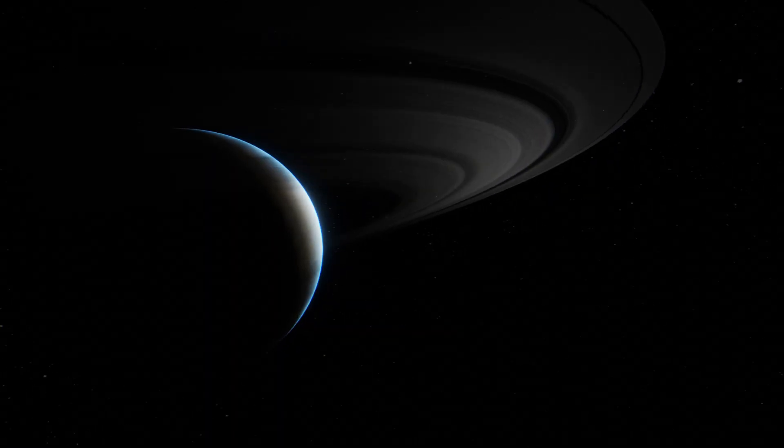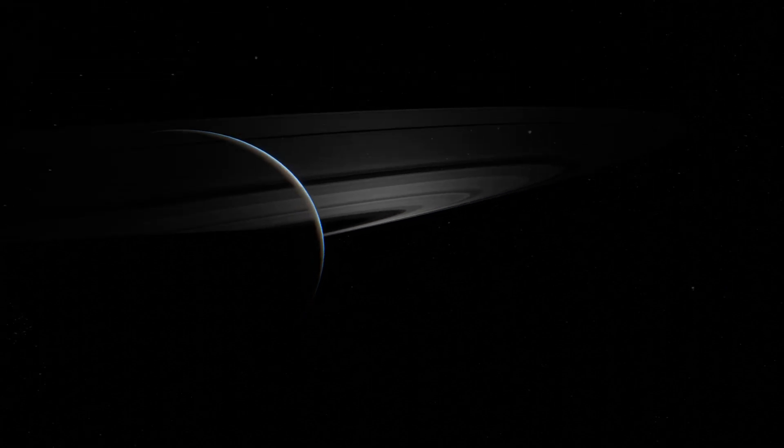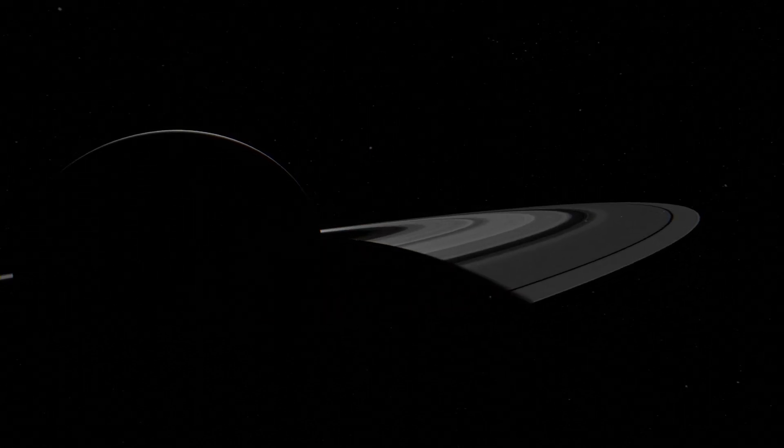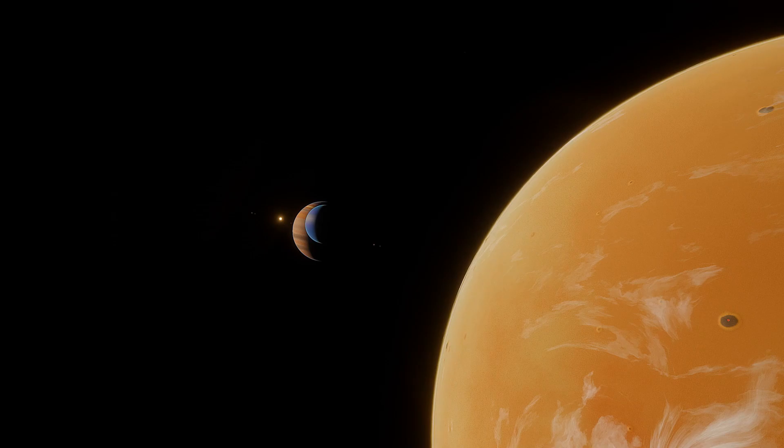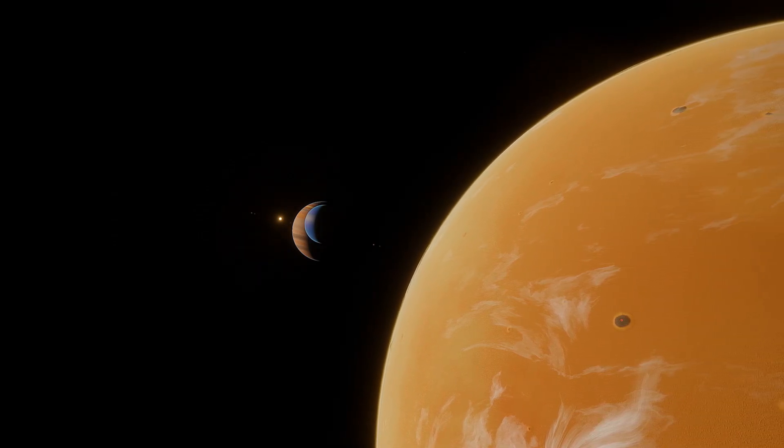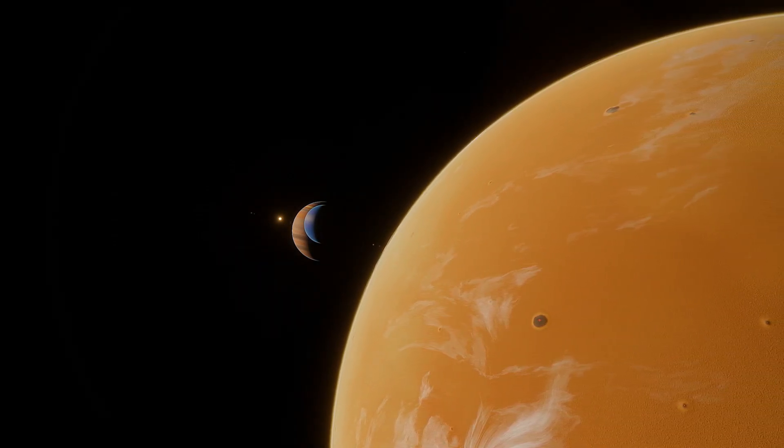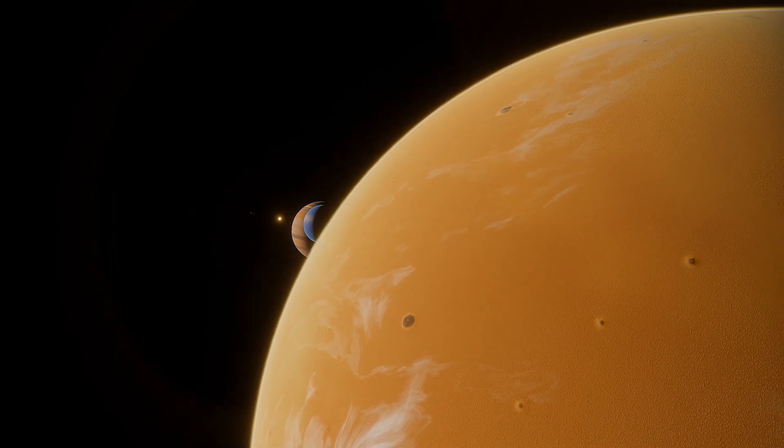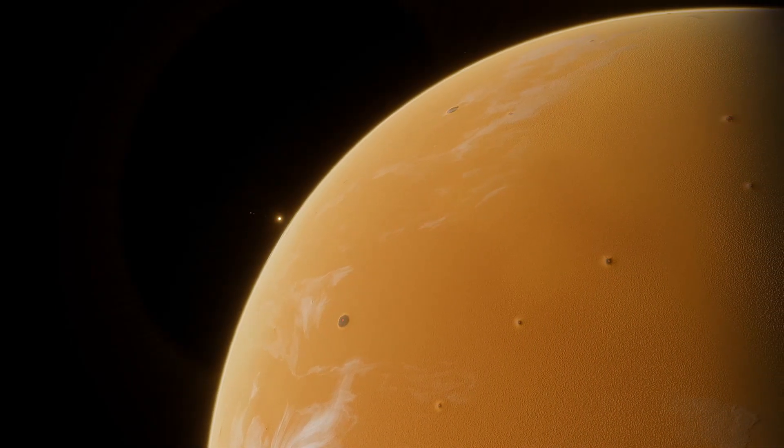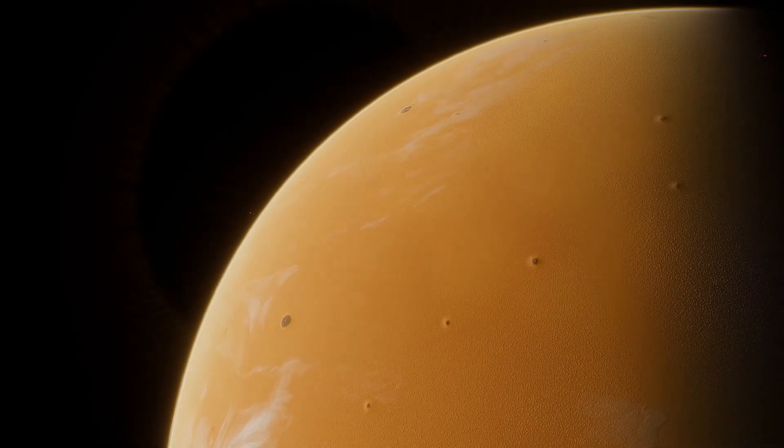Saturn's rings, for example, are remnants of moons torn apart by the planet's immense gravitational pull, while Jupiter's rapid rotation causes it to bulge at the equator. These phenomena demonstrate how gravity can influence the appearance and behavior of planets in varied and fascinating ways.